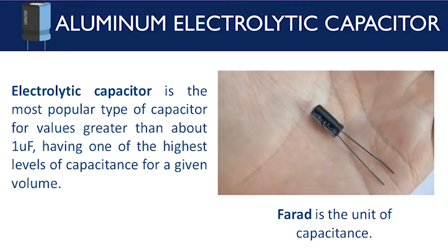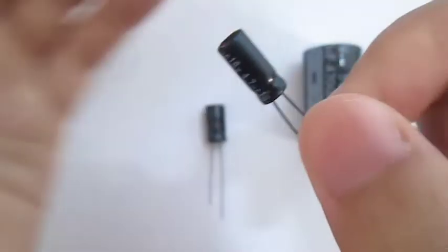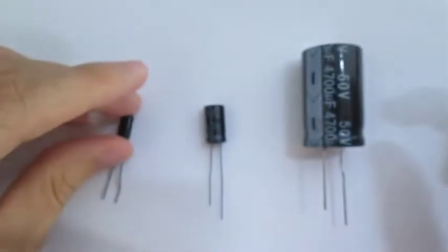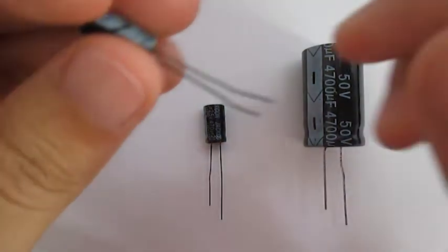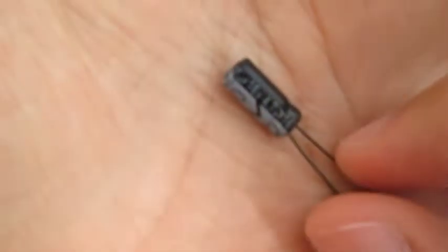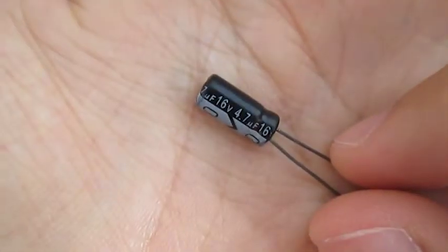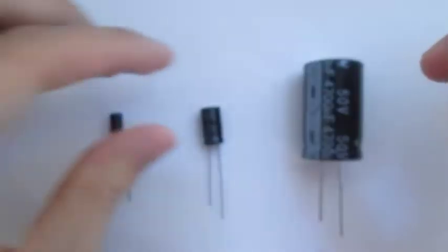Farad is the unit of capacitance. This type of capacitor also comes in different sizes — the bigger the size, the larger the capacitance. The value of its capacitance is written on its body. The capacitance of this small capacitor is 4.7 microfarad, and the value of the second capacitor is 470 microfarad.